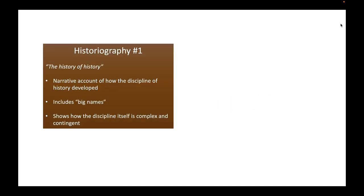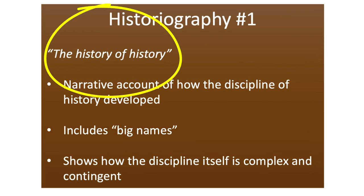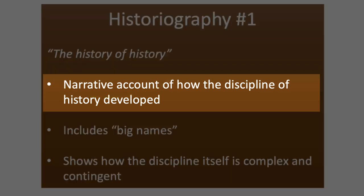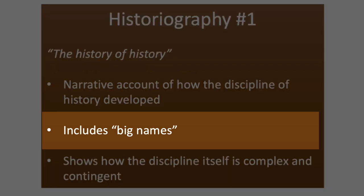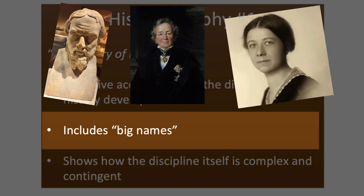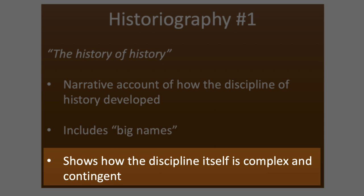The first definition of historiography was the one we wrestled with in the first module of this course. In this sense, historiography essentially just means the history of history — the history of the historical discipline. It's a narrative account of how the discipline emerged and developed and changed over time, including big names like Herodotus, Ranke, and Mary Beard.